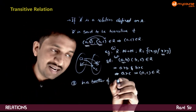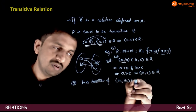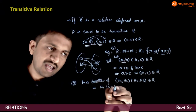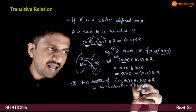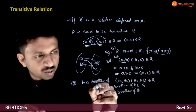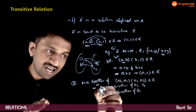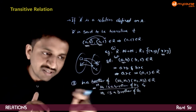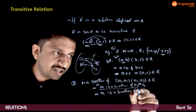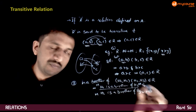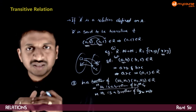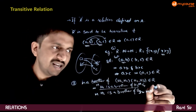Yes, let us see why. Say ordered pairs (H1, H2) and (H2, H3) belong to R. This implies H1 is a brother of H2, and H2 is a brother of H3. Since H1 is a brother of H2, H1 has to be male. The second statement confirms H2 is also male. H3 can be male or female. Since H1 is male and H1 is related to H3 through H2, H1 is a brother of H3. Hence this is a transitive relation.